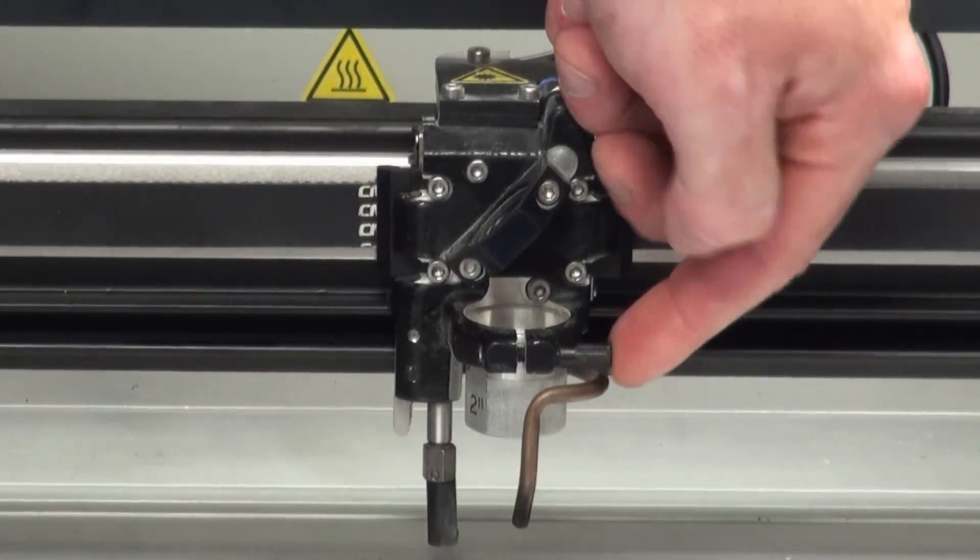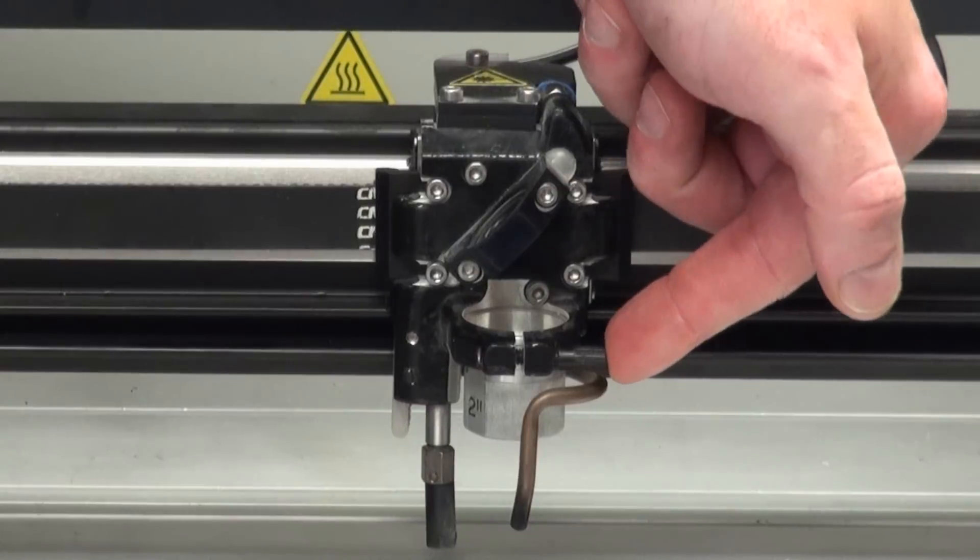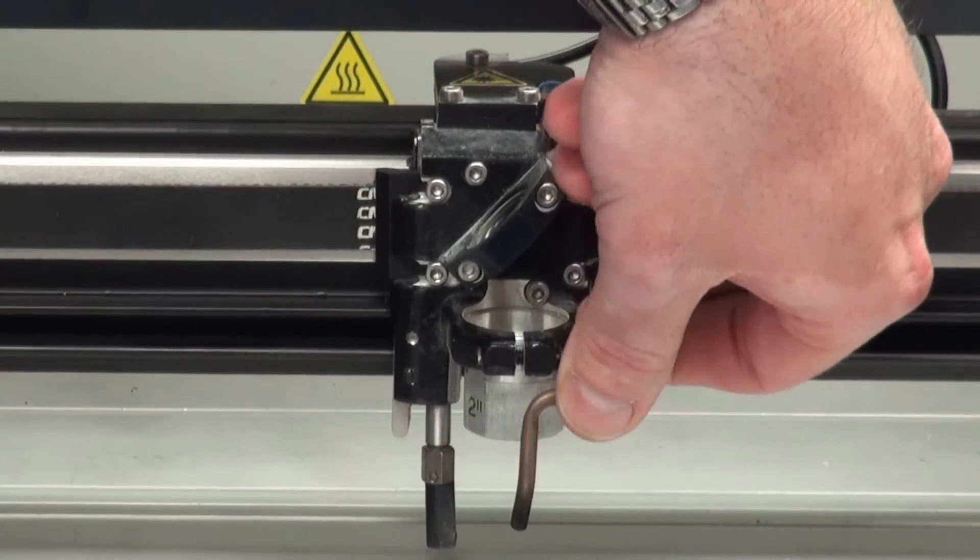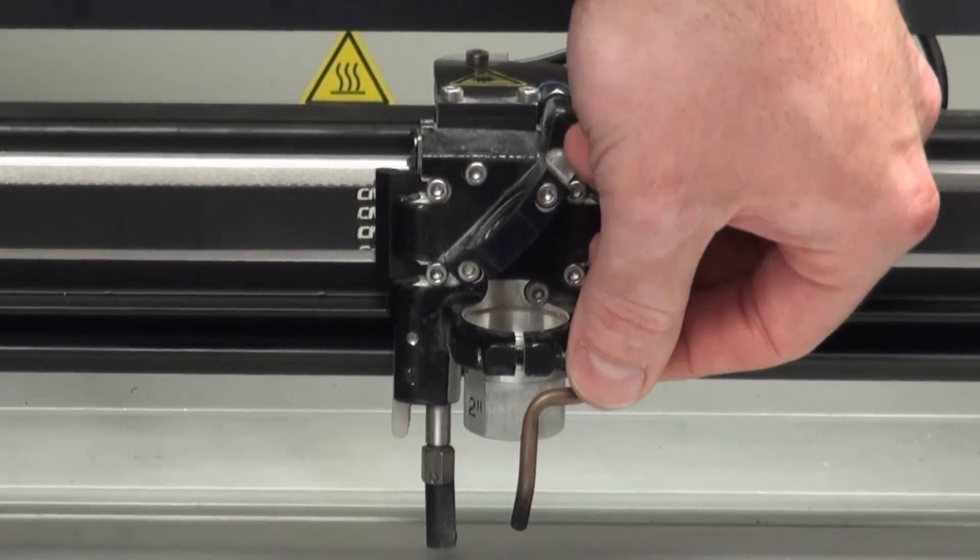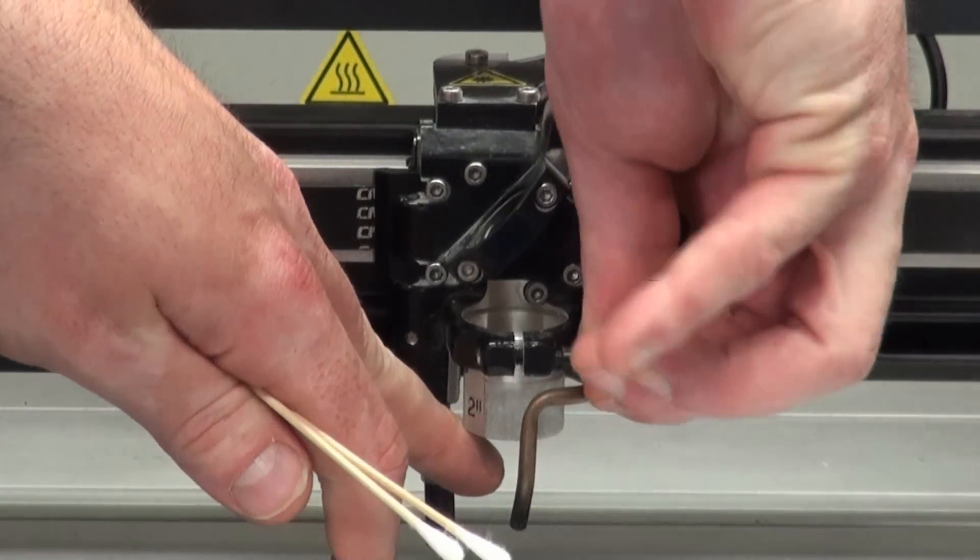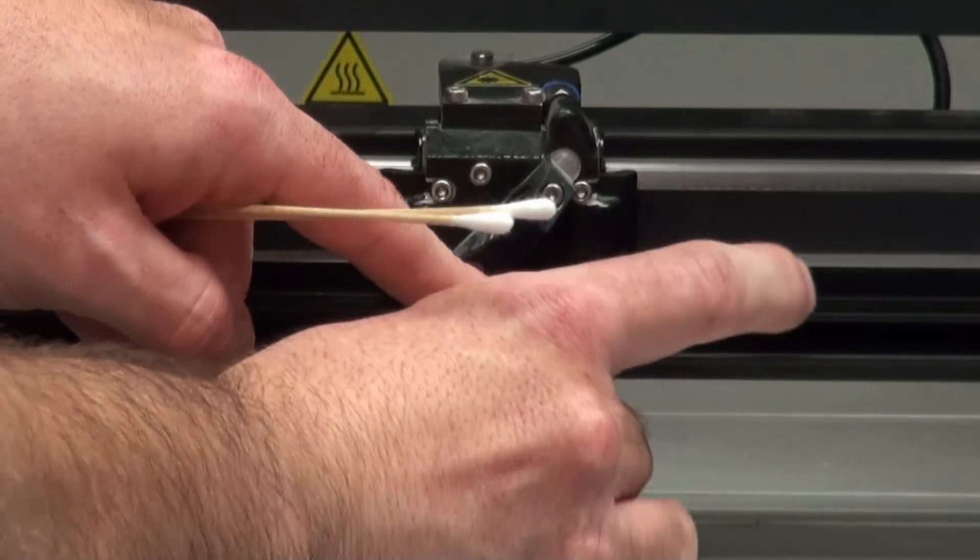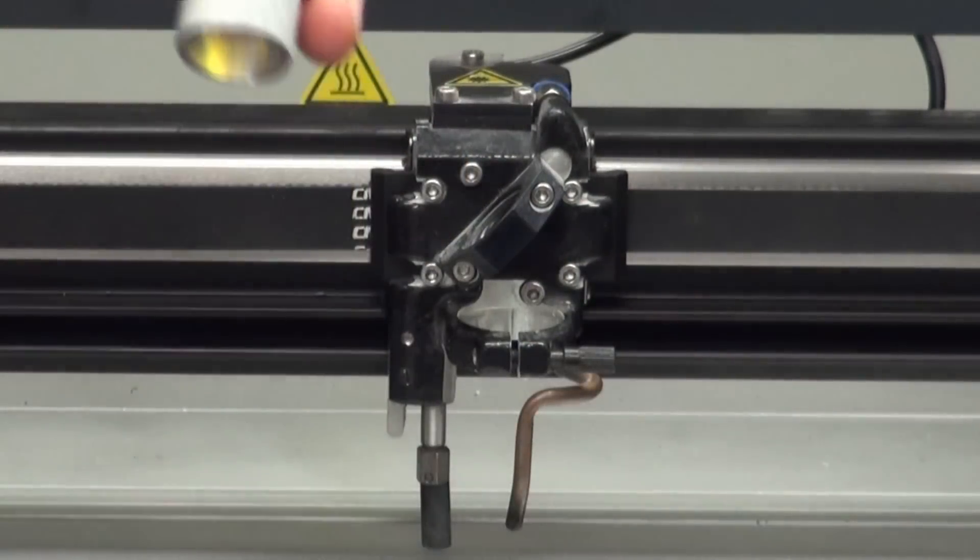And you'll notice on the front of it right here, right above your air assist, is a little tiny black plastic knob. All you're going to do is loosen this. So go ahead and loosen the tension itself. And the lens will come out.